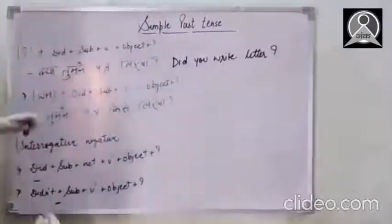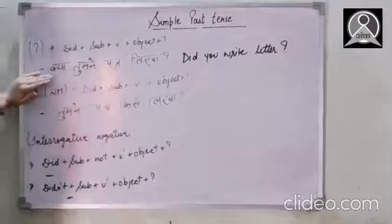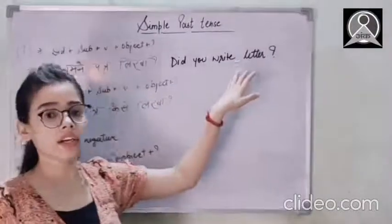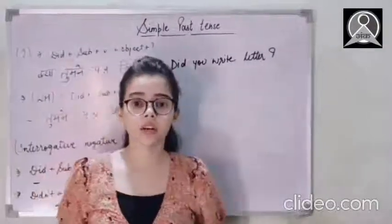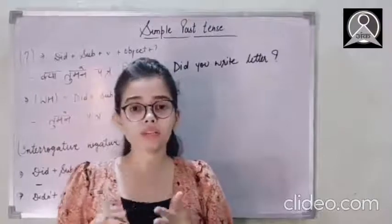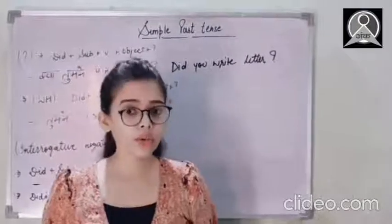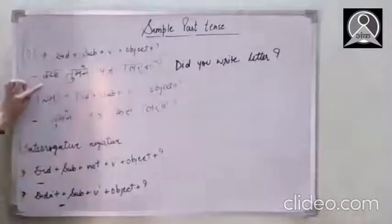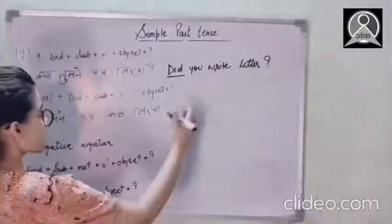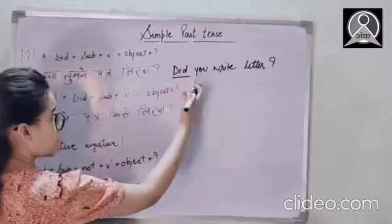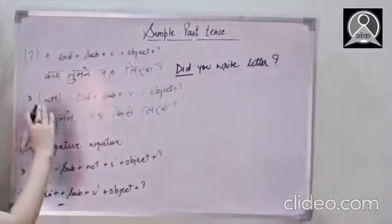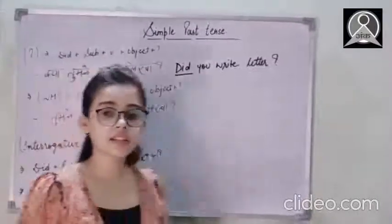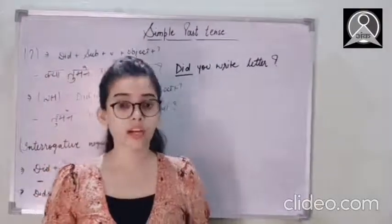And here, see. This is the question. If I'm going to answer this question, did you write letter, then the answer will be yes or no. Yes, I wrote the letter, or no, I didn't. So here, the answer is in yes or no, that's why we're using did at the very first instead of using WH. Because here I'm not giving an explanation first. Firstly, I'm going to give the answer in yes or no. I hope this is clear.